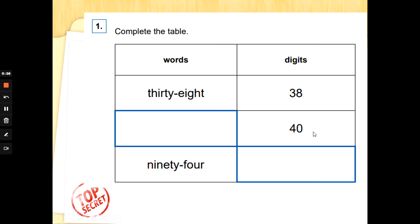So we've got the number in digits 40. We need to spell 40. Oh, now don't forget to proofread. I know that's how you spell four and I know that's how you spell 14, but it doesn't look right to me. I'm gonna have another look.